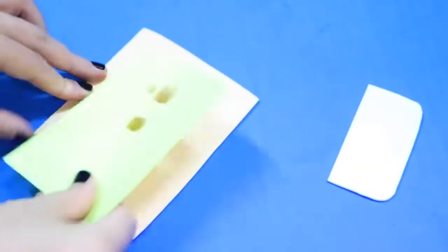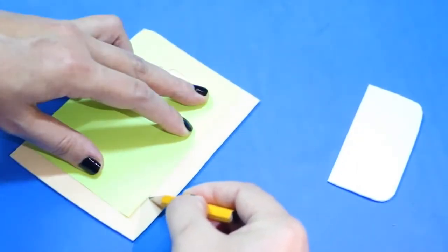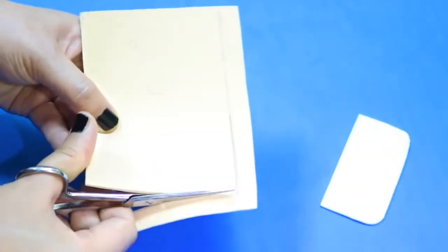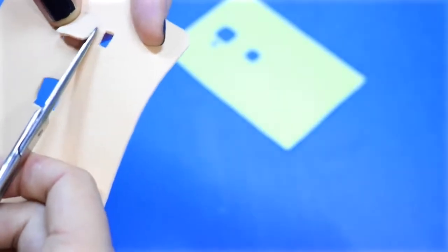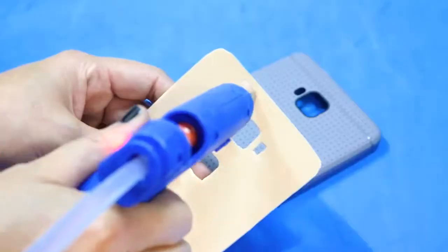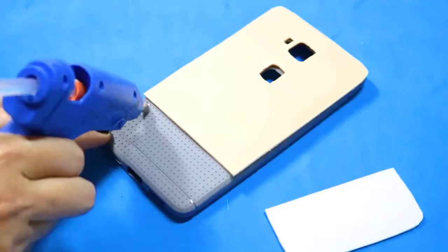Now trace the top part of the template on some beige foam. For this piece, you can use a box cutter and a ruler to help cut the holes out more easily. Once you're done cutting, glue both of the foam pieces on the case like I'm doing here.